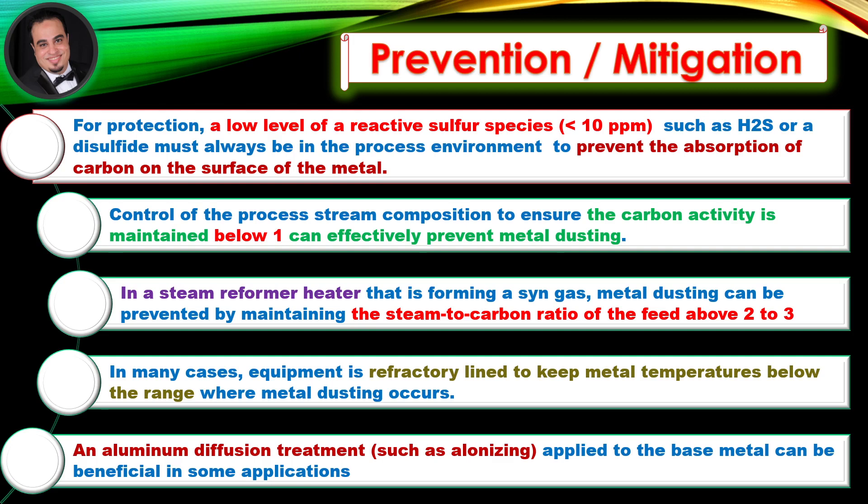In many cases, equipment is refractory lined to keep metal temperatures below the range where metal dusting occurs. An aluminum diffusion treatment, such as alanizing, applied to the base metal can be beneficial in some applications.